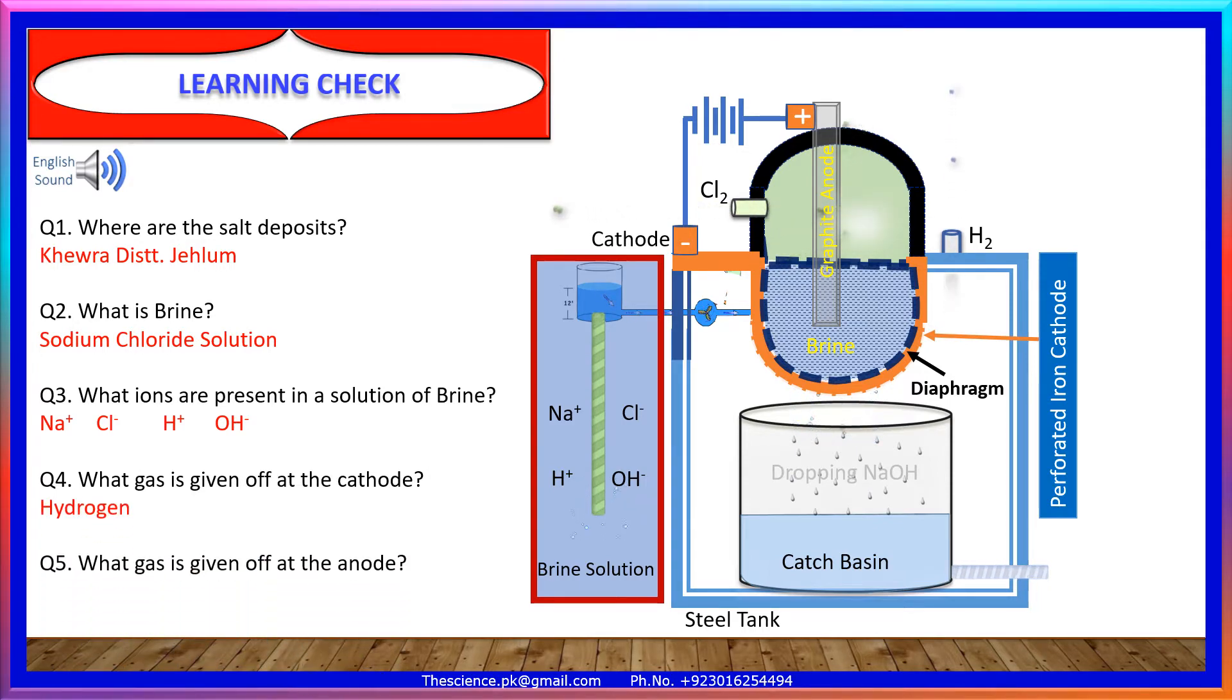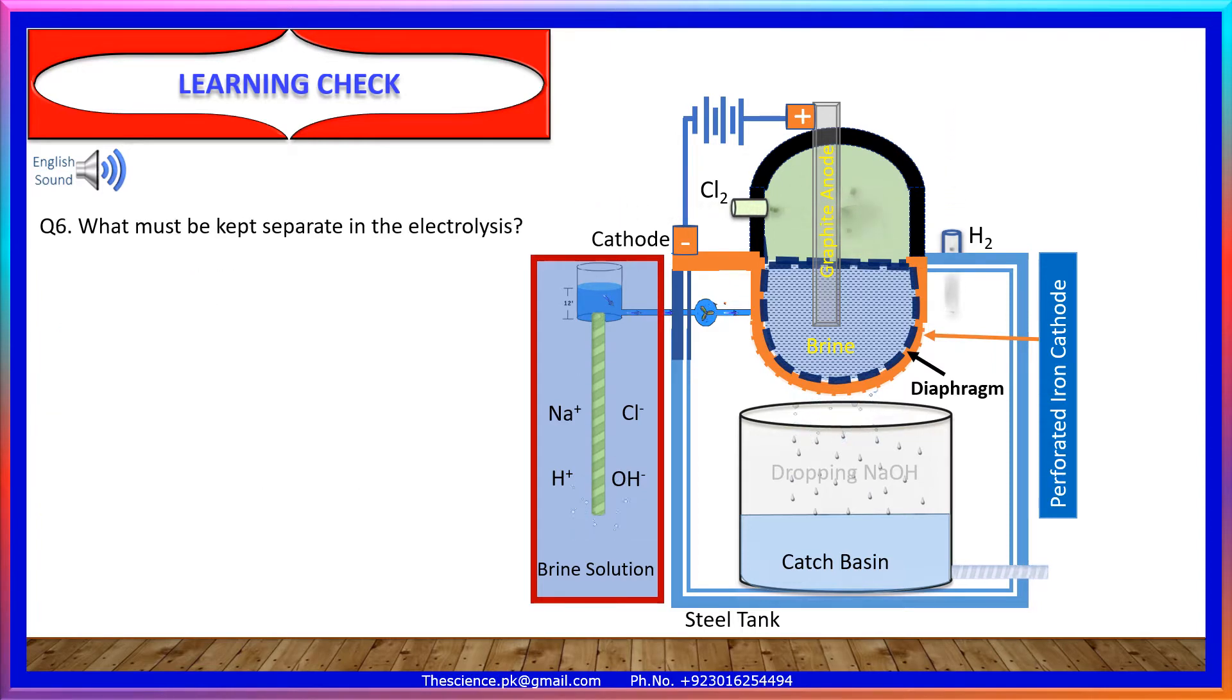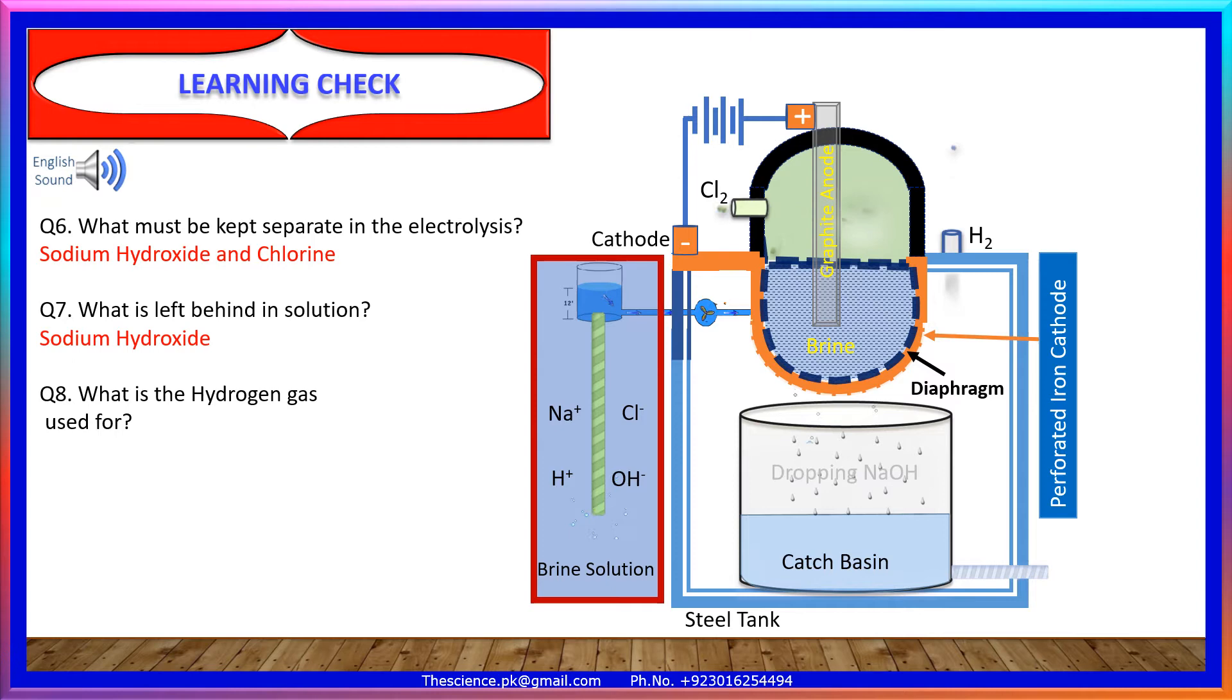What gas is given off at the anode? What must be kept separate in electrolysis? What is left behind in solution? What is the hydrogen gas used for? What is the chlorine gas used for?